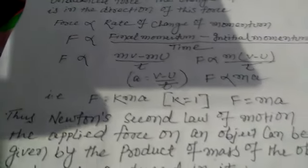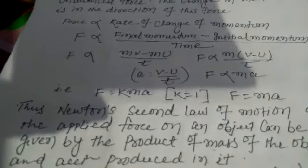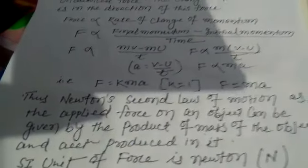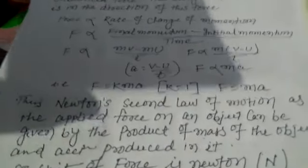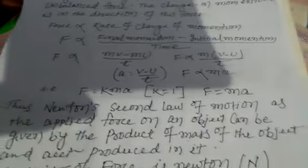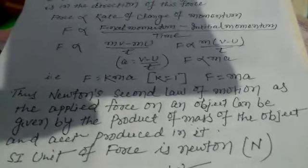So Newton's second law of motion states that the applied force on an object can be given by the product of the mass of the object and the acceleration produced in it when a force acts on it, causing a change in velocity with respect to time. The SI unit of force is known as the Newton, and 1 Newton is equal to 1 kg times 1 meter per second squared.